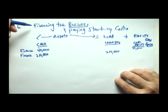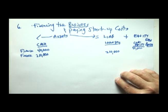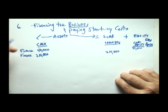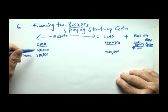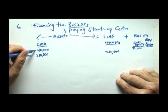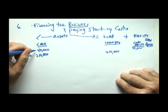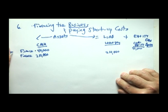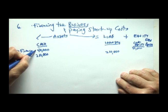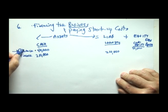This video is called Financing the Business. The very first transactions for a business are almost always financing activities. When cash goes into the business from the owner's personal investment, that is the business's first source of cash financing. We label that change in cash with an F for financing activity.